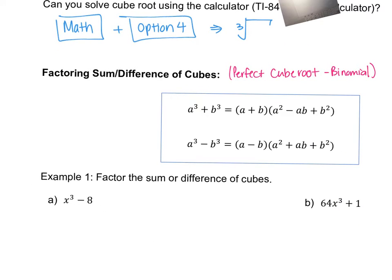All these problems have two terms and you are asked to factor them using this formula. The first thing you need is to figure out what your A is and what your B is, because this formula consistently uses an A and a B. Next, figure out the signs. If you have a plus sign, your first factor has a plus sign, then a negative sign, then a plus sign. If you start with a negative sign, you'll have a negative, then a plus, then a plus. The last terms always have a plus sign, and the two signs in the middle are opposites.